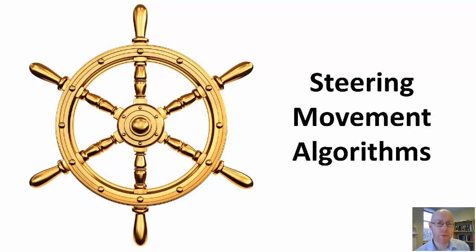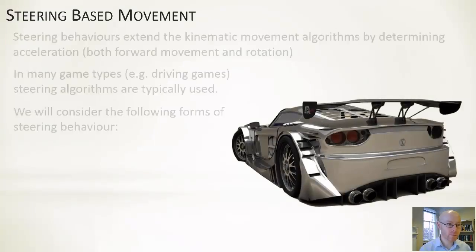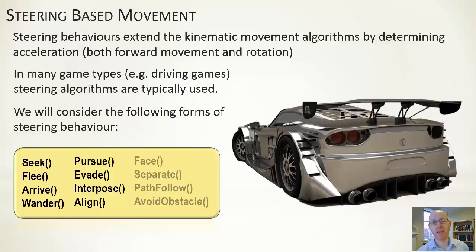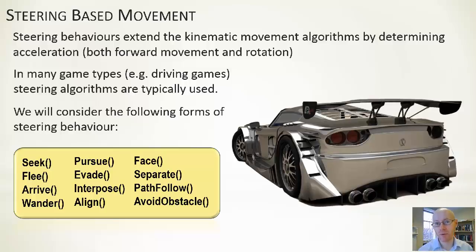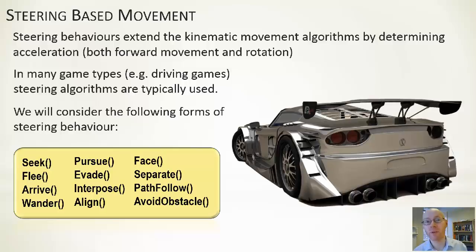For most of the 2D games we're looking at, smooth continuous motion is what we need, and these are also quite capable when applied to 3D games. Steering-based movements are a more fancy form of the kinematic algorithms — as opposed to outputting a velocity directly, they output an acceleration, and we use that acceleration to update our velocity. So we have a smoothly varying velocity and get nice smooth motion in our games.